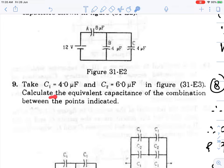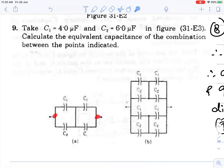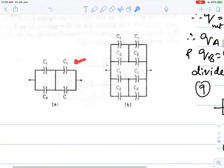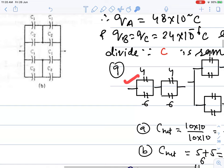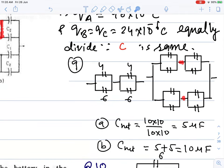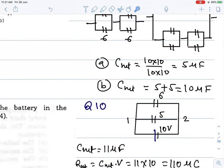Take C₁ = 4.0 µF and C₂ = 6.0 µF as shown in the figure. Calculate the equivalent capacitance of the combination between the points indicated. The two points connected by wire are at the same potential. Identify points 1 and 2, and determine the series and parallel combinations. Two 10 µF capacitors in series give 5 µF. Just do part B on your own.